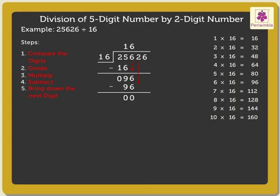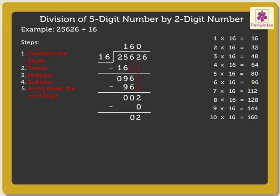Now, bring down the next digit, that is, two. Here, two is smaller than sixteen — there are not enough tens to divide. So, write zero in the quotient above two. Therefore, subtract zero from two, which is equal to two.